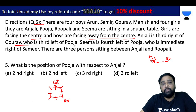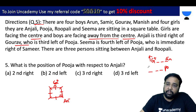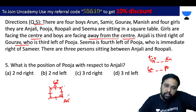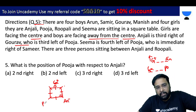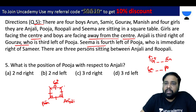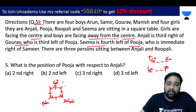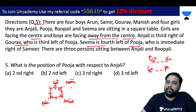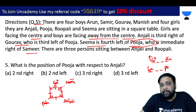Gaurav is third left of Pooja. Pooja is immediate right of Samir. So Samir is on the left side, and Pooja is immediately to the right of Samir.